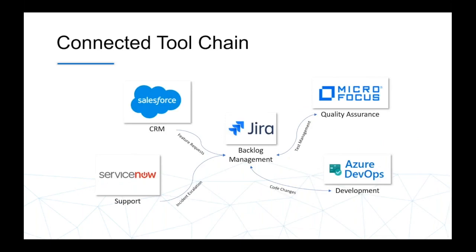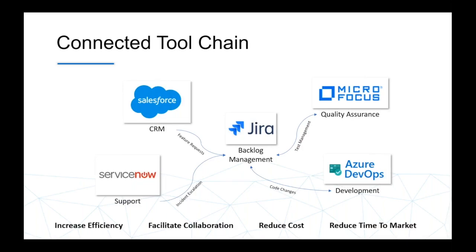The way this works is by building a connected toolchain. As a customer, as a DevOps consumer, you have some sort of process that you go through today — most have it written down in published standards, sometimes more informal guidelines. What we want to do is enable that process, automating the movement of data from one endpoint to another, whether it's incident data from ServiceNow to Jira or development data from Jira to DevOps. All of this, once you build that connected toolchain, increases your efficiency. The more streamlined that process is, the lower the cost of your development. It also totals collaboration so everybody knows what everyone else is doing, ultimately reducing your overall time to market.